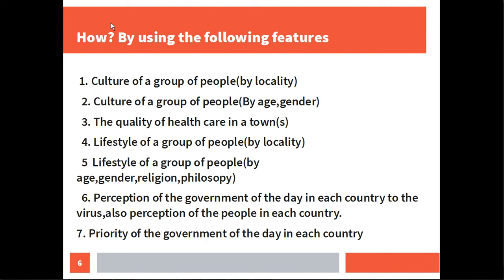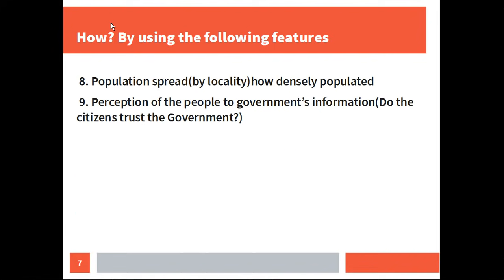The sixth point is the perception of the government of the day in each country towards the virus, as well as the perception of the people in each country. The seventh point is the priority of the government of the day in each country. The eighth point is population spread by locality.